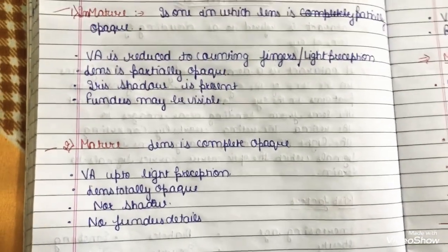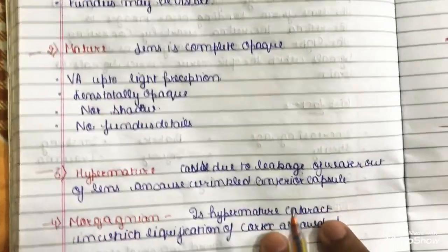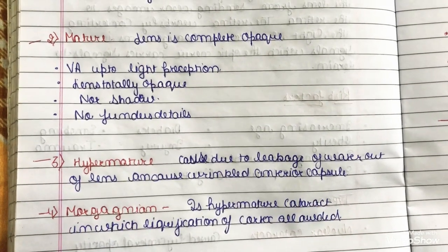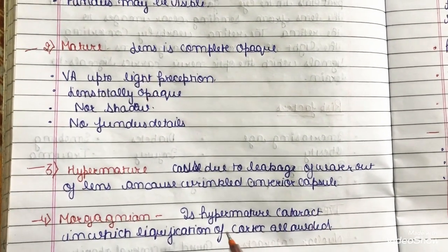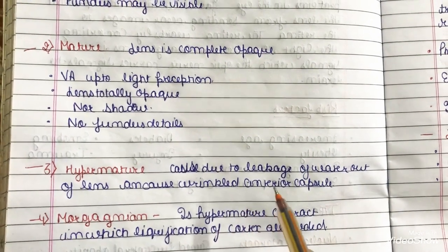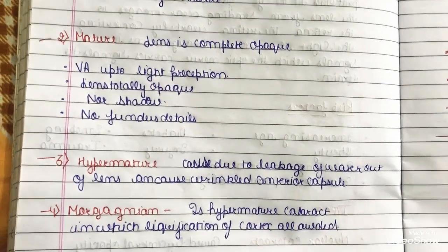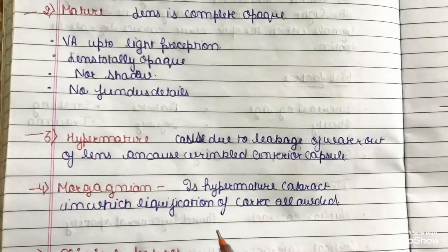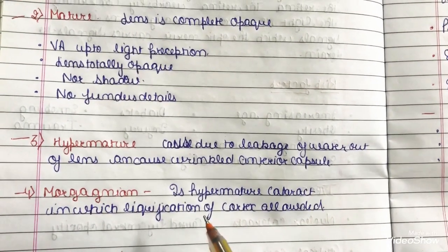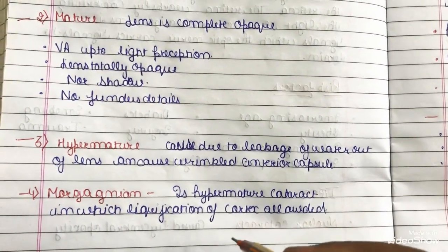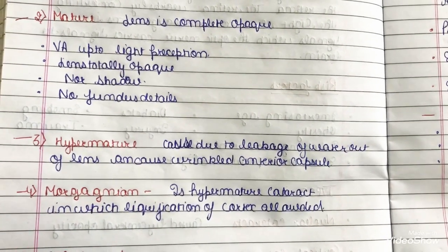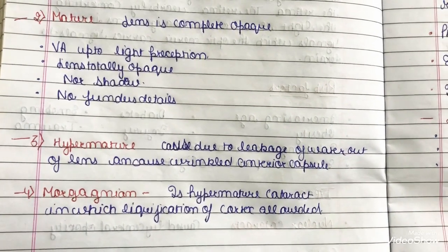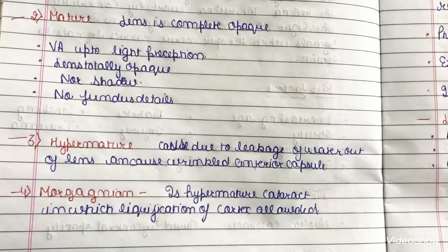Hypermature cataract is caused due to the leakage of water out of the lens, resulting in a wrinkled anterior capsule. Morgagnian cataract is a type of hypermature cataract in which liquefaction of the cortex has occurred.